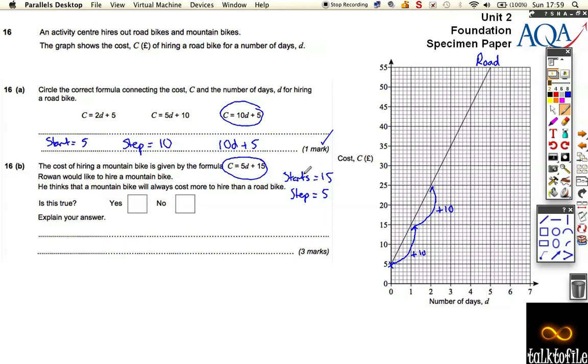Now this time you start slightly higher at 15 pounds, but you step up 5 pounds per day. We want to find out whether the mountain bike is going to always cost more or cost less. So let's plot this in pink. It's going to start at 15 and every day it goes up 5 pounds like this.